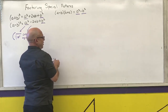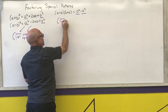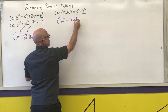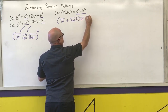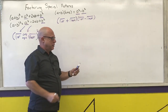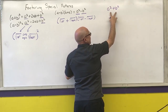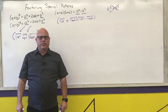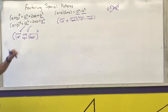If it's in the form a squared minus b squared, it's going to be the square root of the first plus the square root of the last, times the square root of the first minus the square root of the last. Notice I cannot — cannot at all — factor a sum of two squares. I cannot factor that. So what we are going to do is do some examples using these patterns.